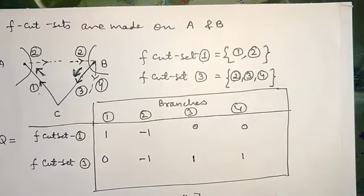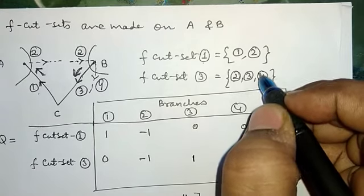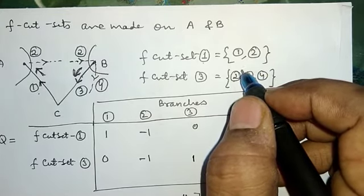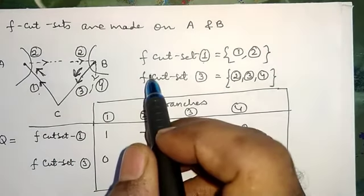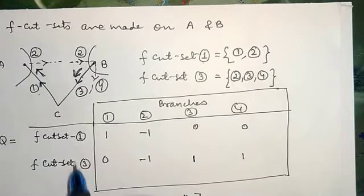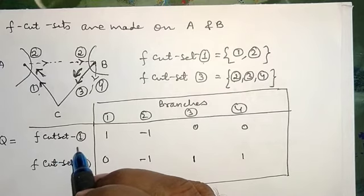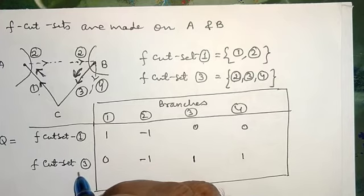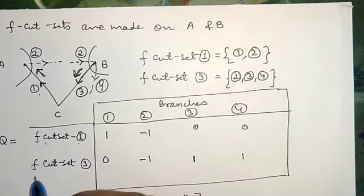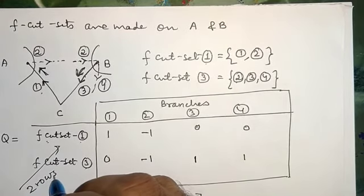On the basis of this, I have decided F-cut set 1 and F-cut set 3 — meaning there are two F-cut sets, because the number of F-cut sets is equal to number of twigs. To form the F-cut set matrix Q, the number of rows equals the number of F-cut sets. There are two F-cut sets, 1 and 3, so there will be two rows here in this F-cut set matrix.